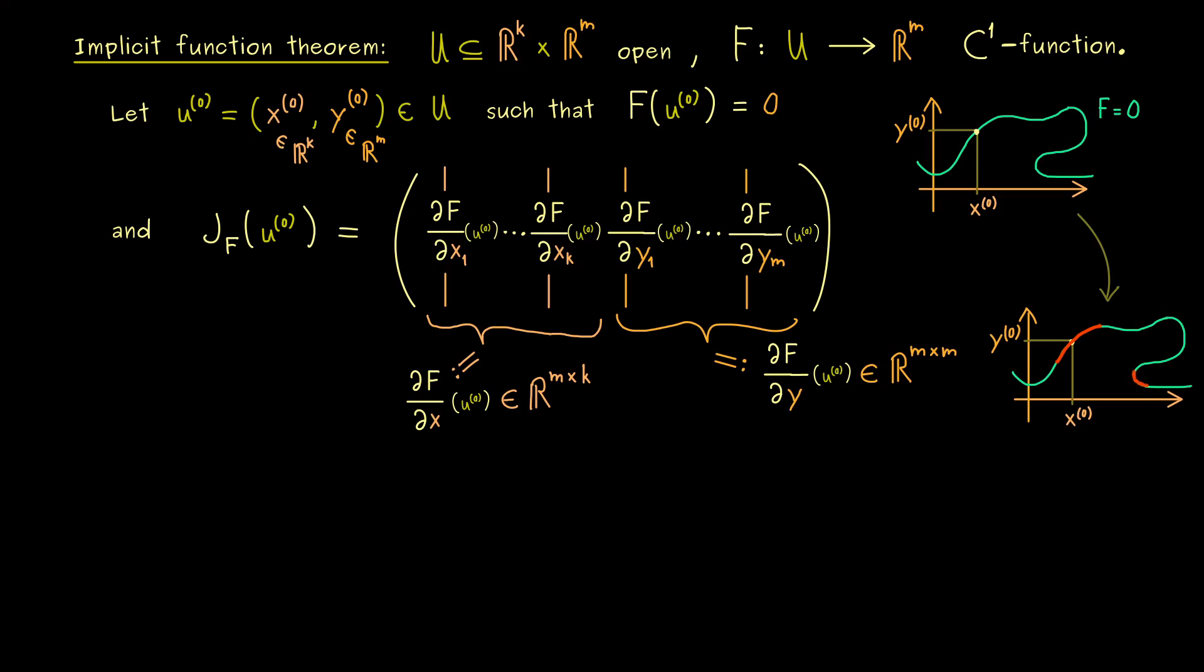It's easy to see, because it goes back and forth, this cannot be a graph of a function, where x is the variable and y is the value. Which means in our theorem here, we have to exclude such points. And since the gradient is always perpendicular to the contour line, we can describe it with it. Indeed, this gradient here would not have a component in the y direction. So this is exactly what we want to exclude. Which means, the whole problem is hidden in the y variables in the Jacobian.